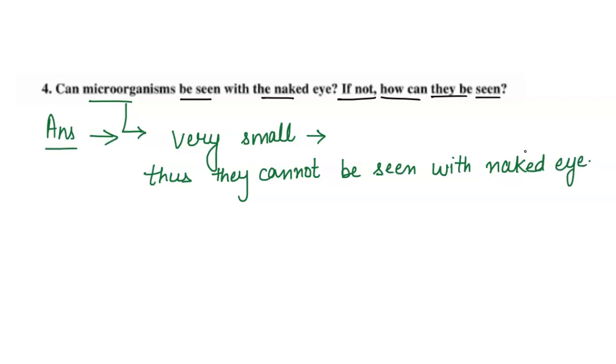So the second part of the question asks, if not, how can they be seen? If we just established that we cannot see them, then how can we see them?